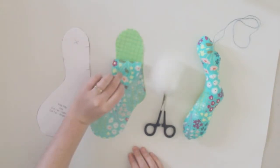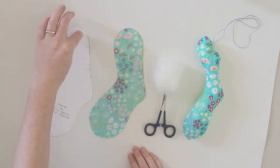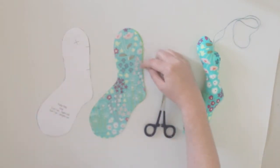Make sure that your fabric is right sides together and you will sew along here, around, and you will stop there. Because this space here is going to be your opening.